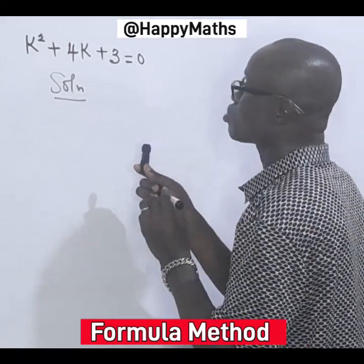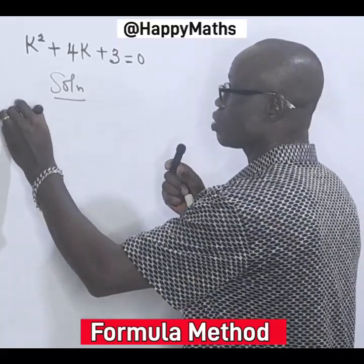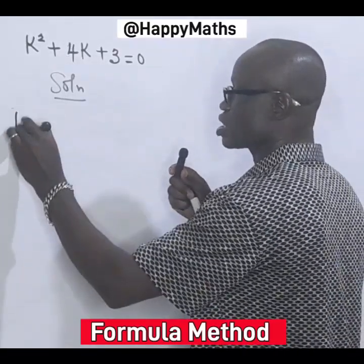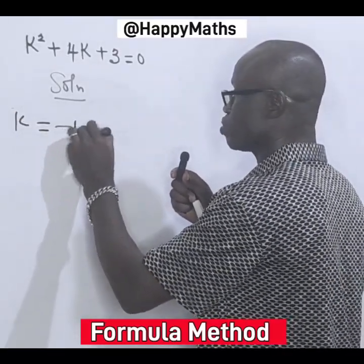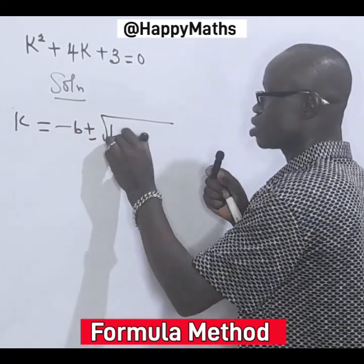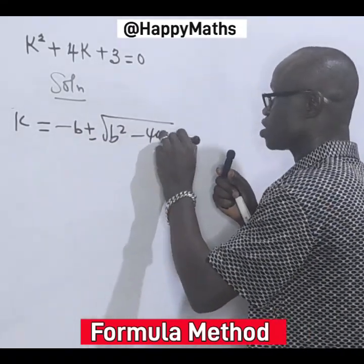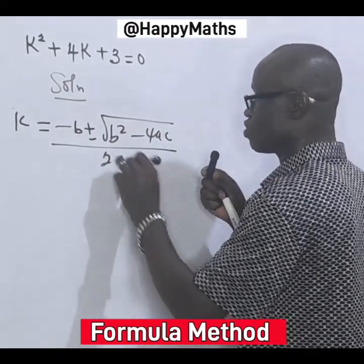Solution: The formula method states, since we have k here, let's take it as k equals minus b plus or minus root b squared minus 4ac over 2a.